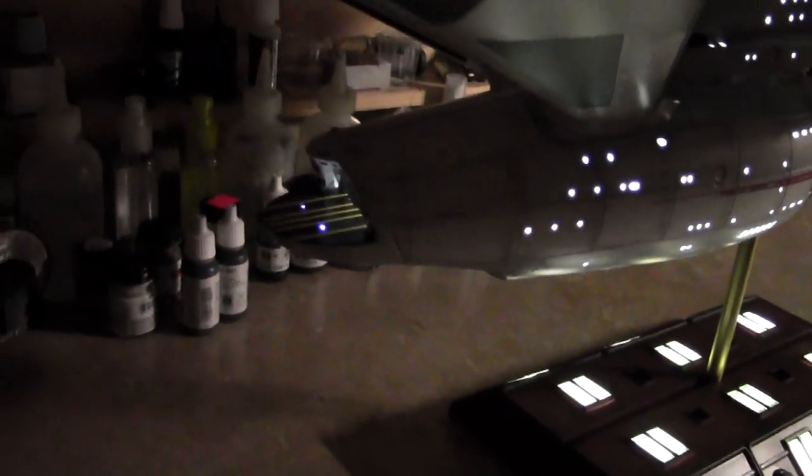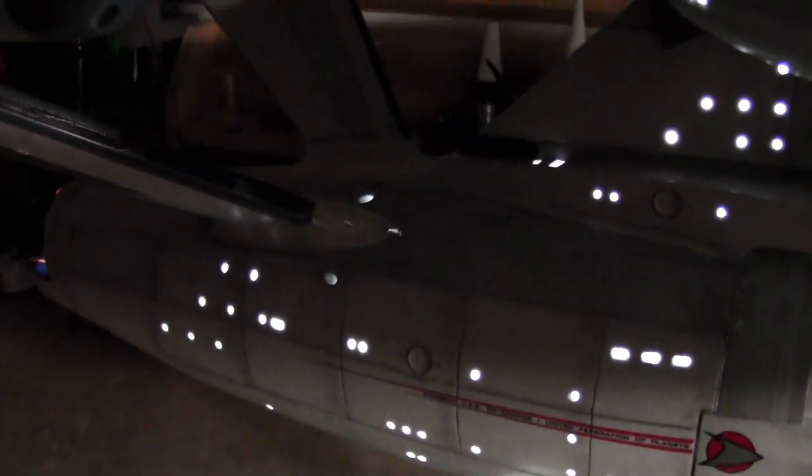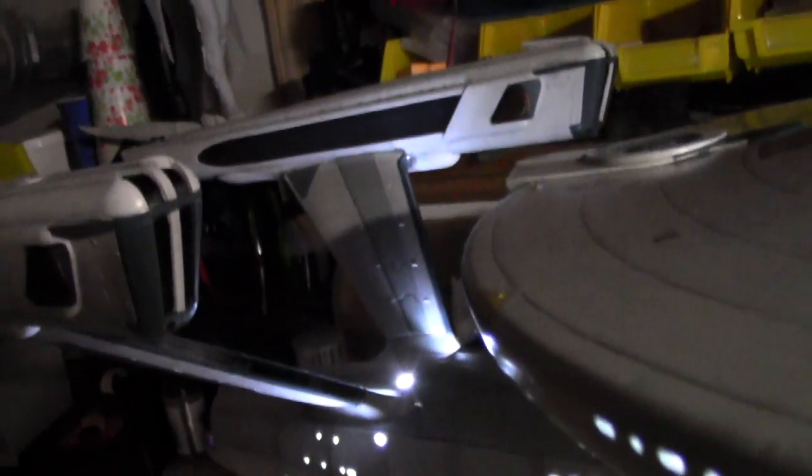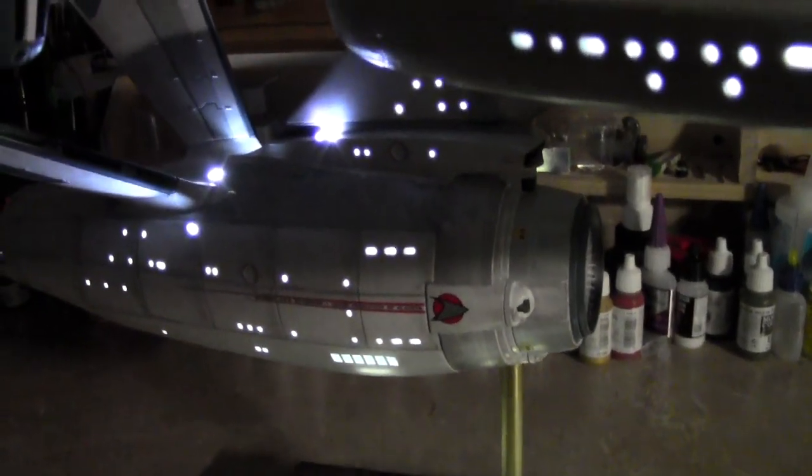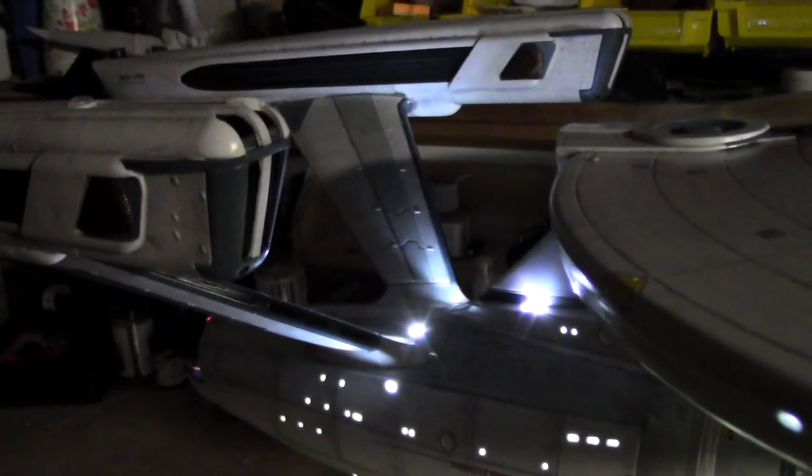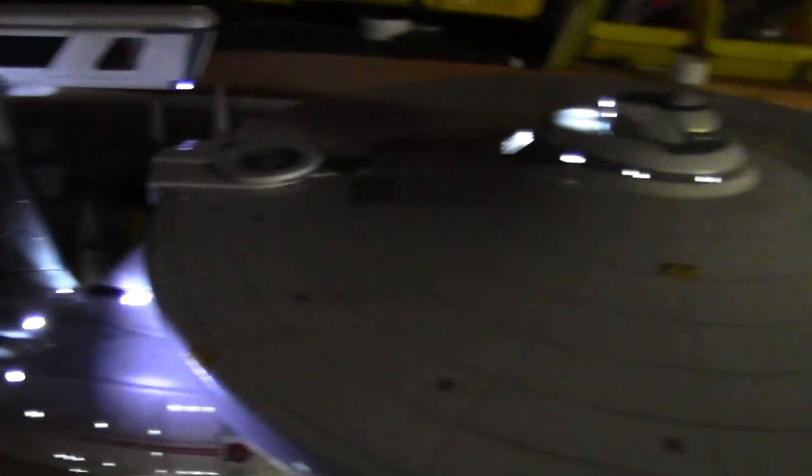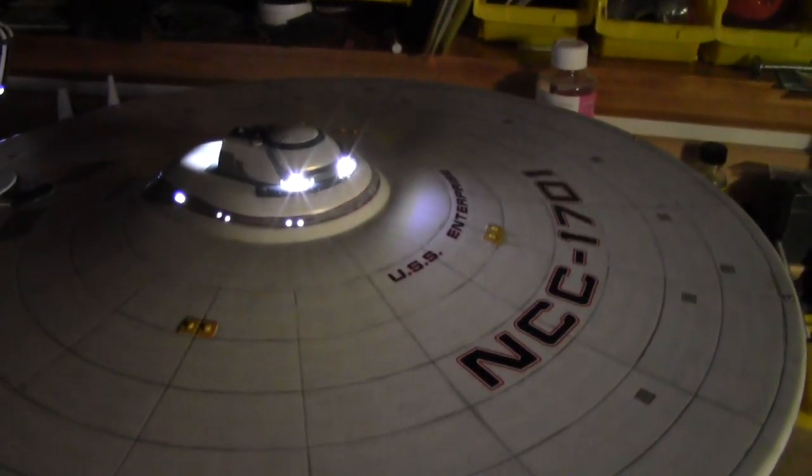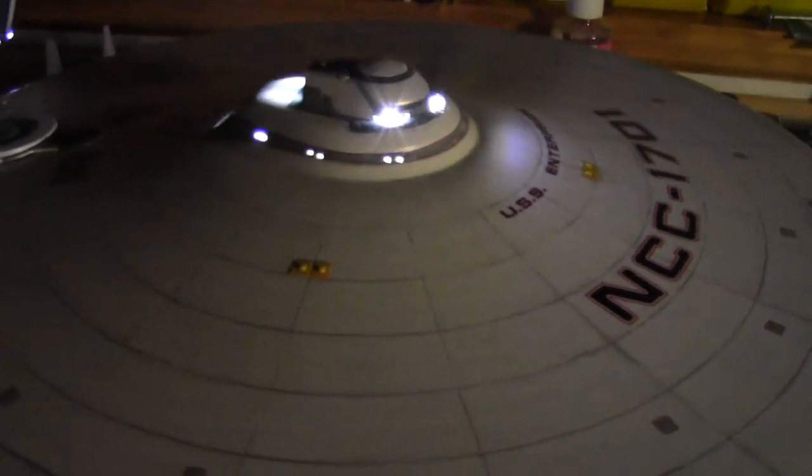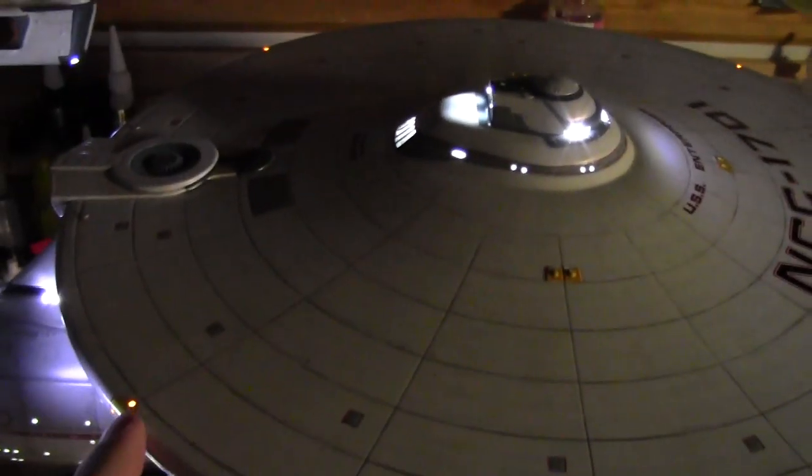Then the saucer. Then these little lights in the back. The spotlights on the pylons. The spotlights on the nacelles. The neck is next. There's the neck. Now the nacelles. And finally, the saucer above and below will turn on.